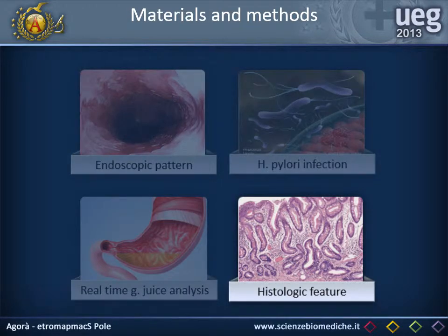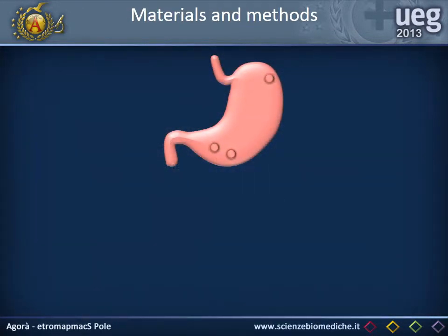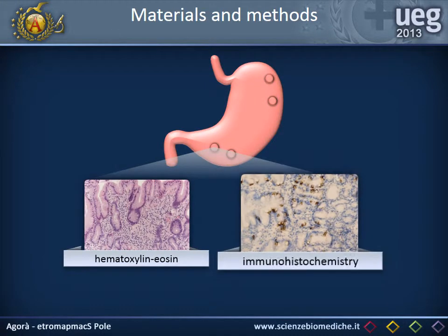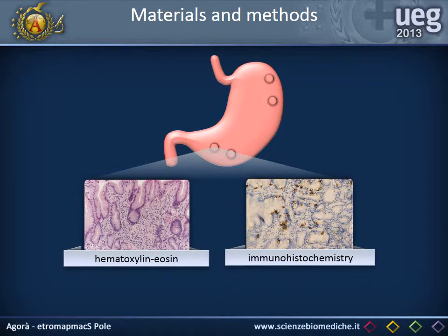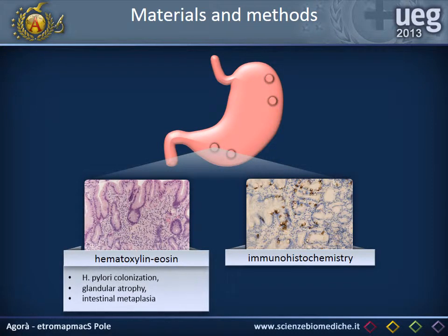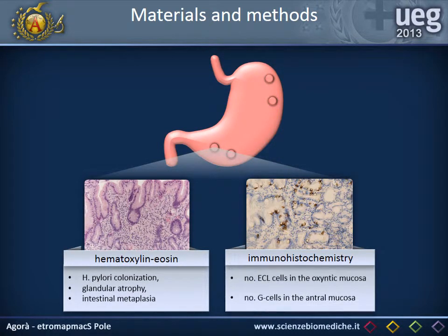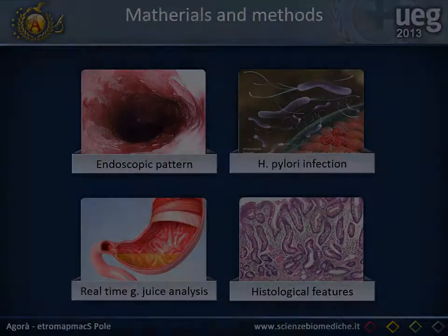As to histology, it was performed by taking two antral and two fundic biopsies from each patient and staining them with hematoxylin-eosin and immunohistochemical stain. The parameters evaluated were H. pylori colonization, glandular atrophy, intestinal metaplasia, ECL cells, and G cells.